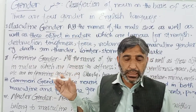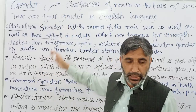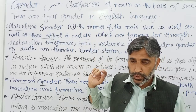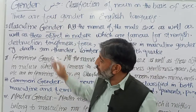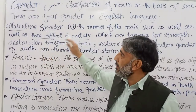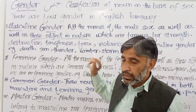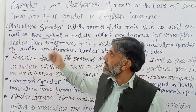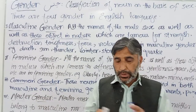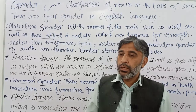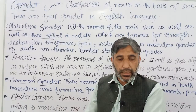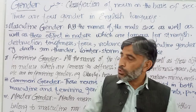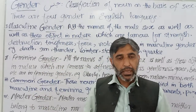Aksar talba yeh galti karte hain ke 'boy' aur 'cow' dono masculine wale khane mein likhte hain, aur 'girl' aur 'ox' dono muannas wale khane mein likhte hain. Yeh galti hai. 'Boy' masculine gender ke niche likhna chahiye aur 'girl' feminine mein. 'Cow' feminine hai to feminine mein likhni chahiye aur 'ox' masculine mein likhna chahiye. Muzakkar wale khane mein muzakkar — nar — likhna chahiye, aur muannas wale khane mein maada ya muannas.